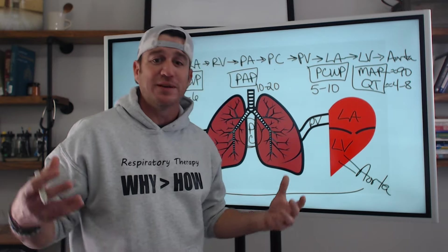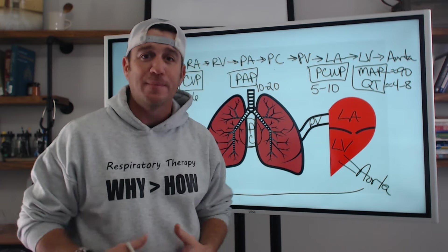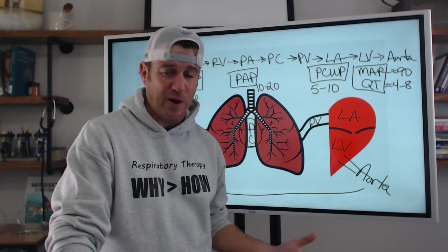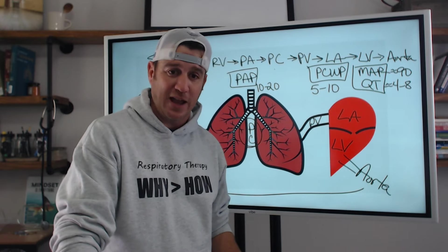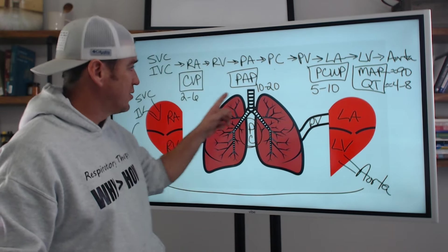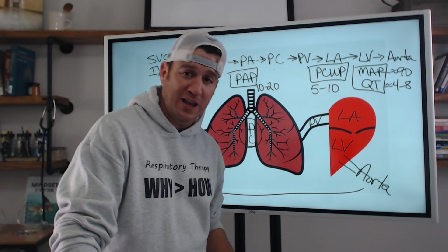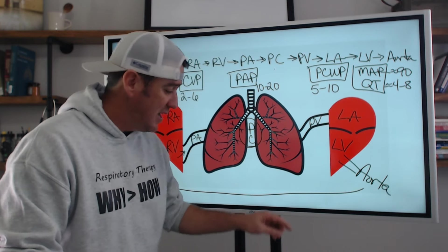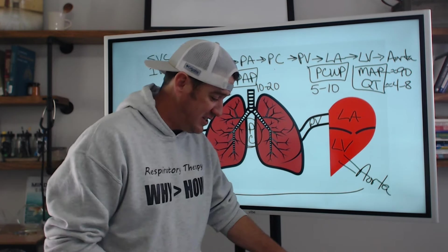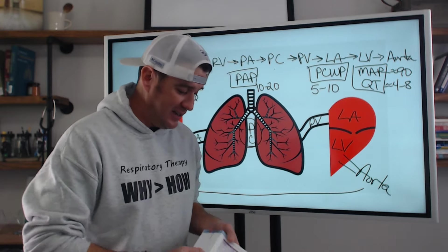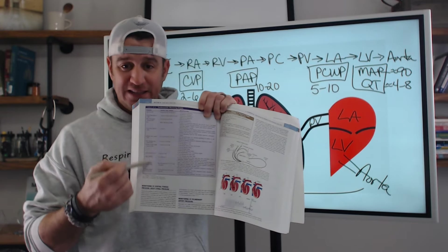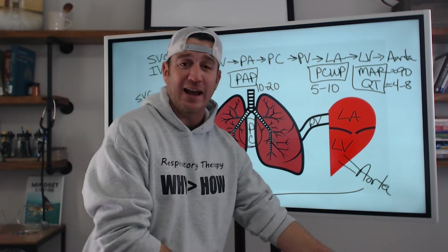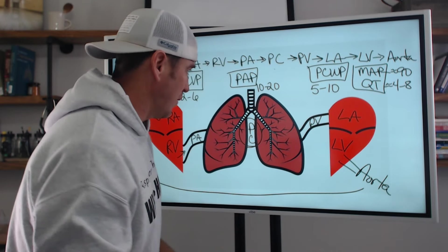A lot to remember, right? Yes, because it's hard. Because why? Because you get to save lives — that's why it's hard. If you're wondering where these normal values came from, they also came from the 12th edition of Egan's, page 1170. There's a table in here that outlines all of these values as well as their normal ranges.